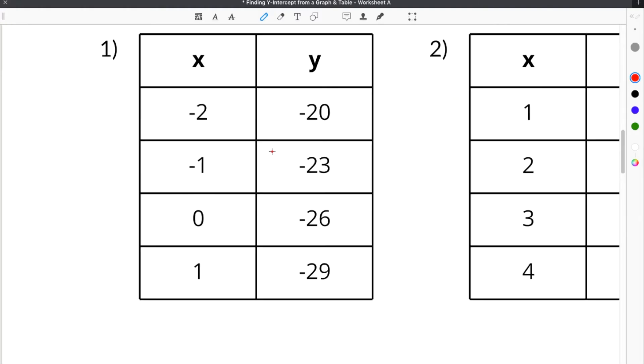The second part about how to find y-intercept is about tables. Now when you look at a table, the way you find the y-intercept is you are looking for when x is equal to 0. So in some tables, it's as easy as looking at the table and identifying when x is 0 and then looking at y.